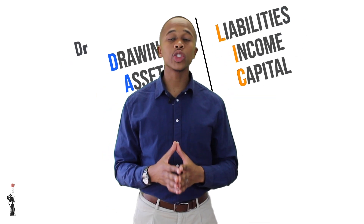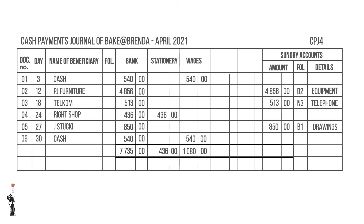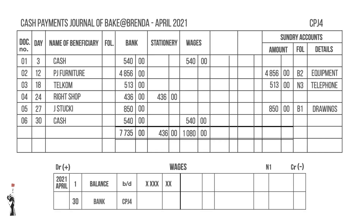Next up is wages. Wages has its own column, which means we will post the date of the last day of the month. Because wages is an expense or loss, it will be recorded on the debit side.